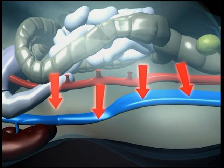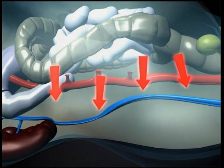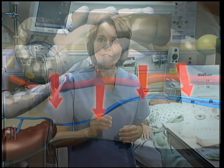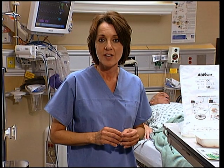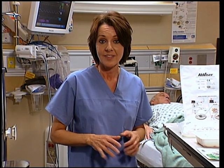This elevated intra-abdominal pressure compresses the inferior vena cava, and as a consequence, blood flow into the heart — also known as preload — drops off dramatically. The result is a decrease in cardiac output and reduced blood flow to critical organs. The reduced blood flow in combination with elevated intra-abdominal pressure often leads to renal and mesenteric ischemia.